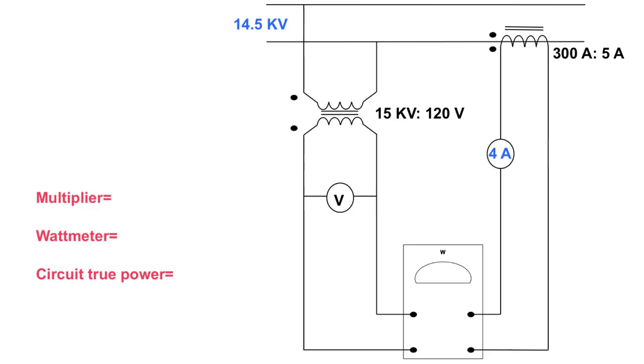Now what we have here are our transformer ratios, 15 KV to 120, 300 to 5 amps. We can't really work with those transformer ratios, we have to go down to a mathematical ratio. So what we're going to do is we're going to take 15,000 to 120 and we're going to divide it into each other to get a ratio of something to 1 and we're going to do the same thing over here and we're going to get our mathematical ratios.